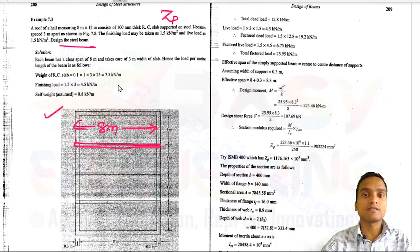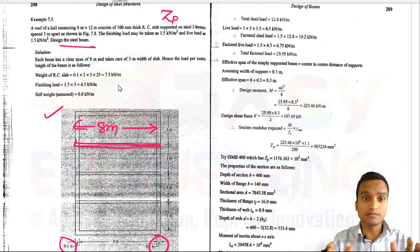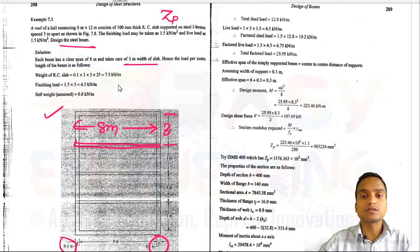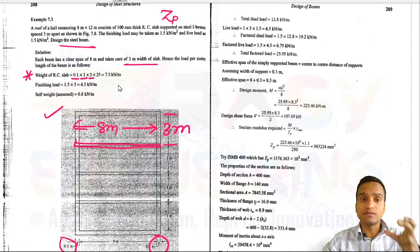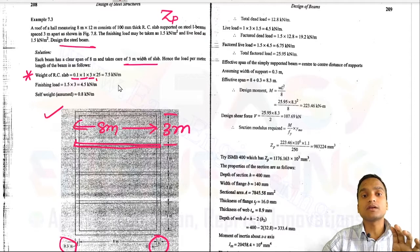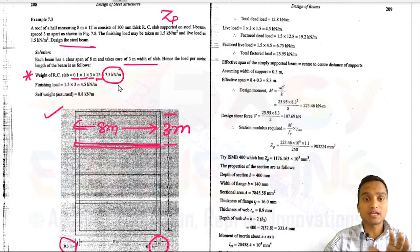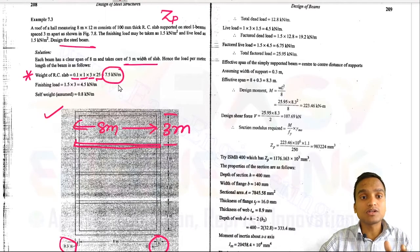The effective span equals clear span plus half the support width on both sides. Each beam has a clear span of 8 m and takes care of 3 m width of slab. The self-weight of the RCC slab is 0.1 m × 3 m × 25 kN/m³ = 7.5 kN/m. The finishing load is 1.5 × 3 = 4.5 kN/m.